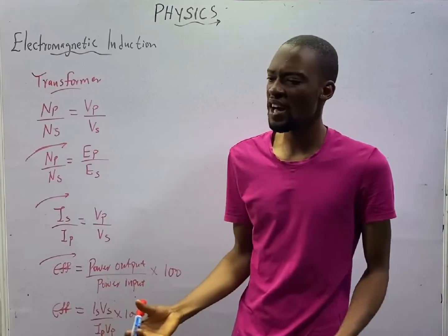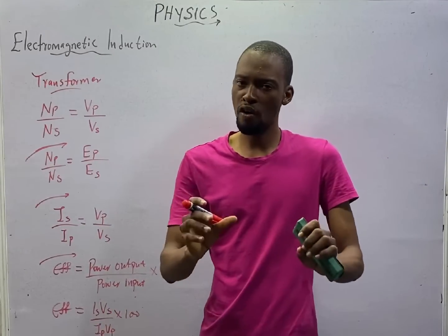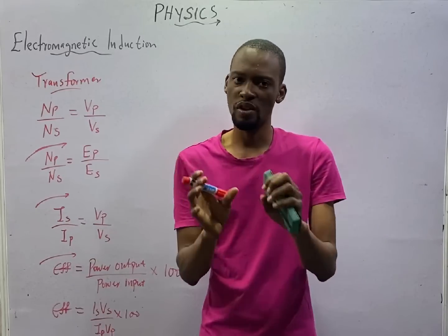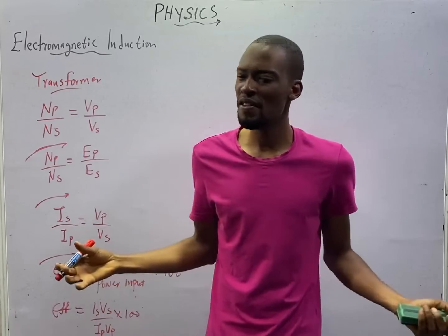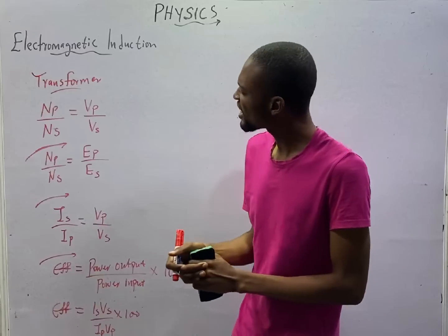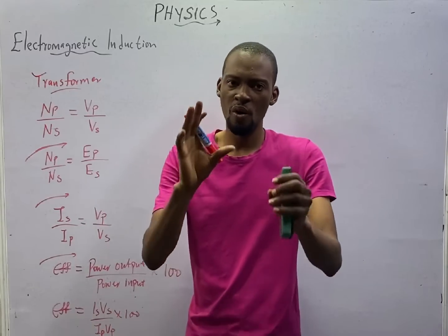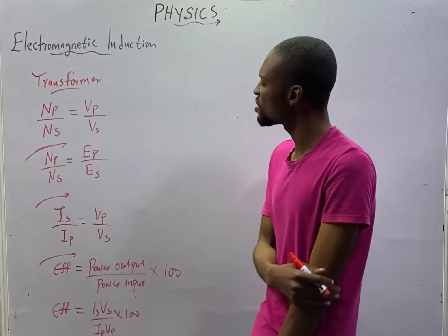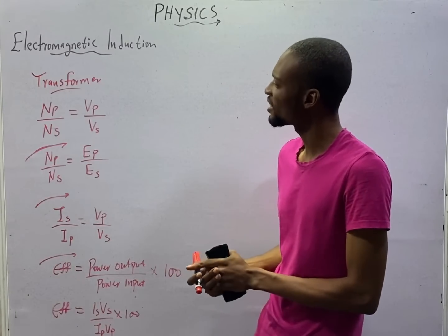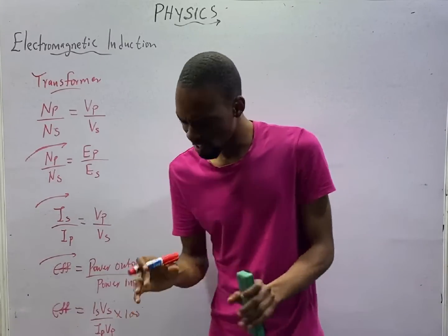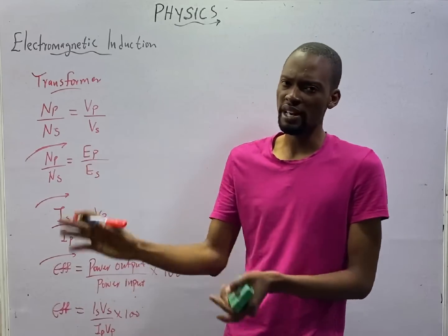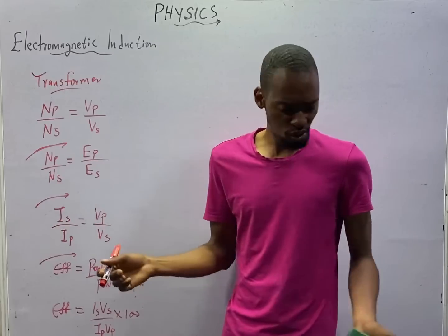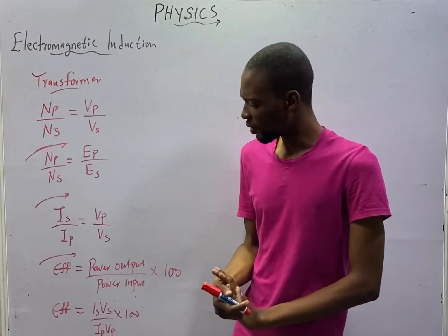You are welcome to another interesting episode of the 120 days to JAM physics with Flash Isaac. In this episode, we shall be looking at calculations under transformer. This should not be your first episode in electromagnetic induction — we have covered about 6 to 7 episodes already. So we actually started from the bottom and you should start from the bottom with this.